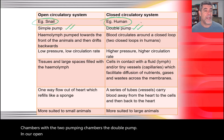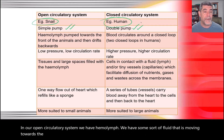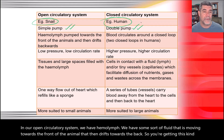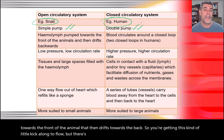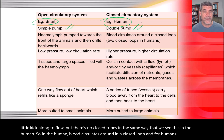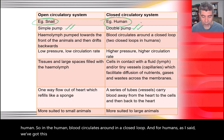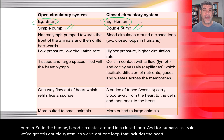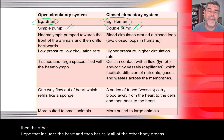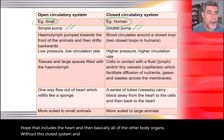In an open circulatory system, there's haemolymph — a fluid moving towards the front of the animal that drifts towards the back, getting a little kick to flow, but with no closed tubes. In humans, blood circulates in a closed loop with a double system: one loop including the heart and lungs, and another loop including the heart and all other body organs.